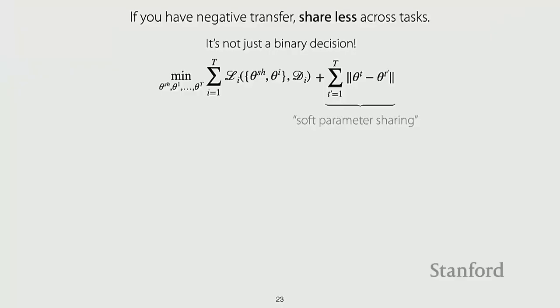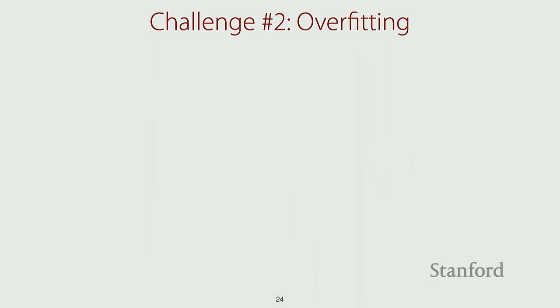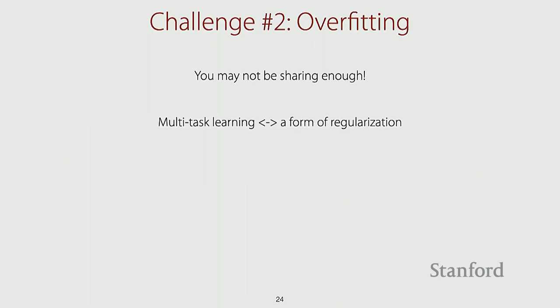The second challenge is somewhat the opposite of negative transfer — overfitting. You may be fitting the training dataset well but not generalizing well. This could be a scenario where you're not sharing enough. Multitask learning in many ways can be viewed as a form of regularization because it gives you more data. Training on different tasks with different labels can be viewed as regularization — though not always a good form since you might have negative transfer. If you are seeing overfitting, sharing more can be helpful because it increases the regularization on your network.